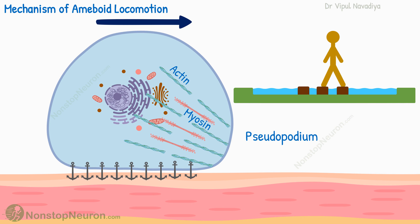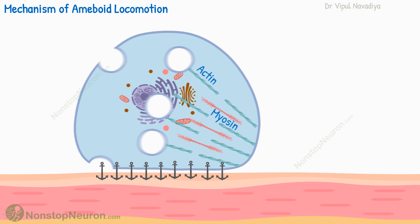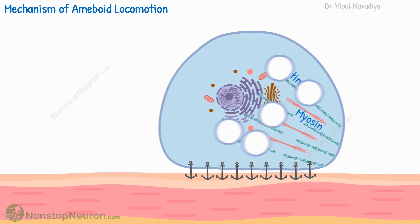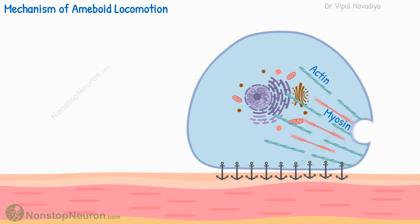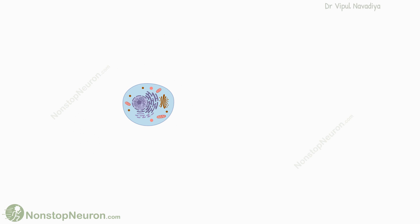Thus the entire cell has moved. Please note that the process was explained in a step-by-step manner, but actually everything is happening simultaneously and continuously, moving the cell forward. So this was the mechanism of amoeboid movement. Now let's talk about the control of this movement, which is called chemotaxis.